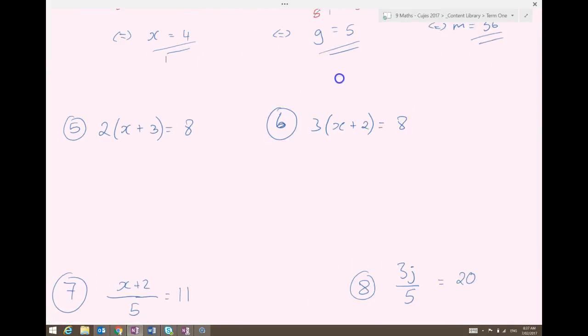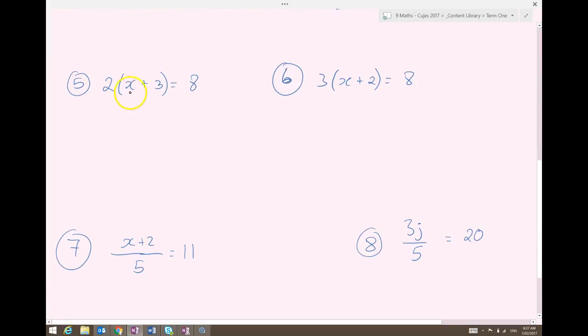The next 2 look almost the same. Here I've got 2 outside of x plus 3 equals 8. Then on the other side, I've got 3 outside of x plus 2 equals 8. You always have two options when you get to an equation that looks like this. So when you maybe simplify one and get down to an equation that looks like this.